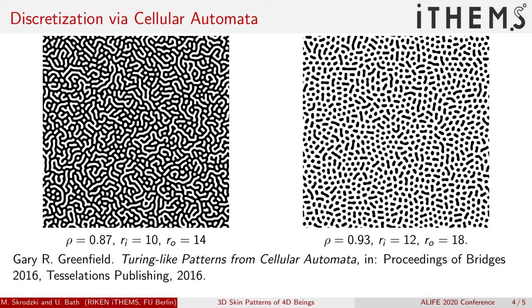and there's an outer radius, the radius of the inhibitor morphogen. Depending on these parameters, you get very different patterns.